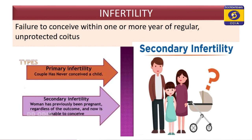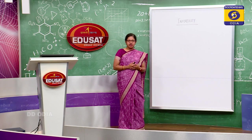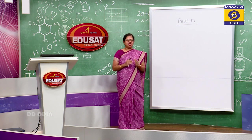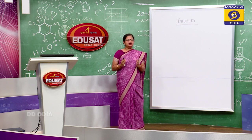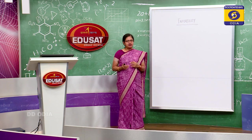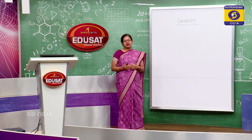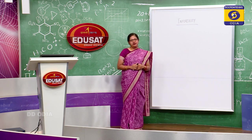How do we define infertility? Infertility can be defined as the failure to conceive within one or more years of uninterrupted coitus. In the case of normal couples who are in their fertile period, if they fail to conceive within a year of uninterrupted unprotected sexual intercourse, we say that they are infertile.